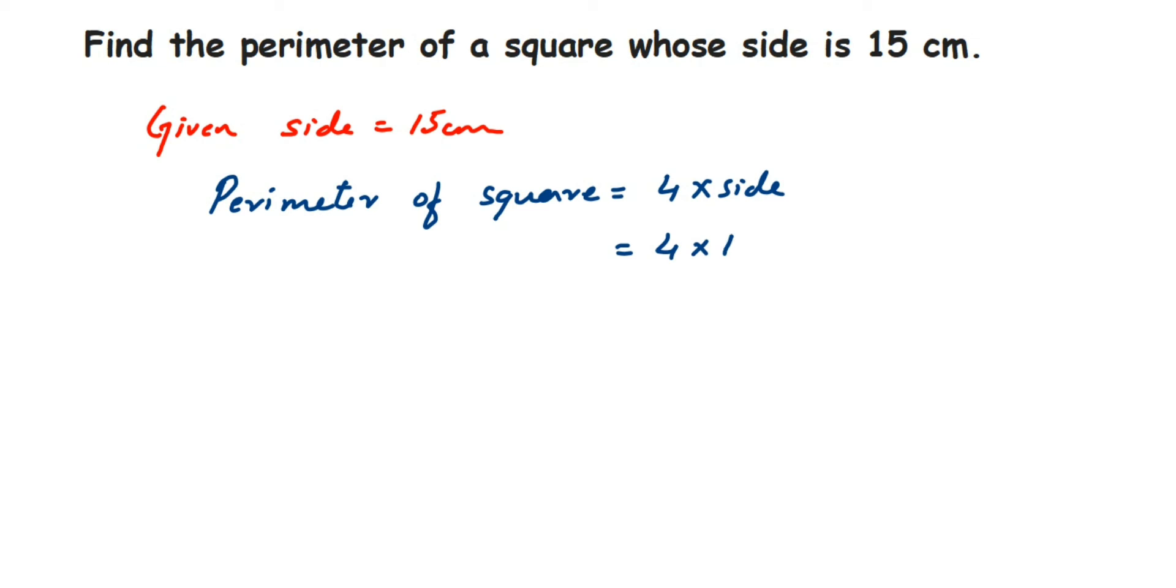Which is 60. So 60 centimeters is the perimeter of the square whose side is 15 centimeters.